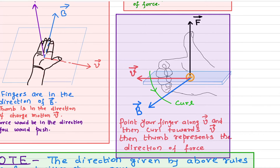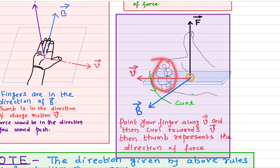The other rule is the curl rule. Let's say the charged particle is moving in this direction. First, you have to align your four fingers in the direction in which the charge is moving. Then you have to curl your fingers in the direction of the magnetic field. So if this is the magnetic field, you curl your fingers toward it, and then your thumb points out in the direction of the force. This is another way of finding out the direction.